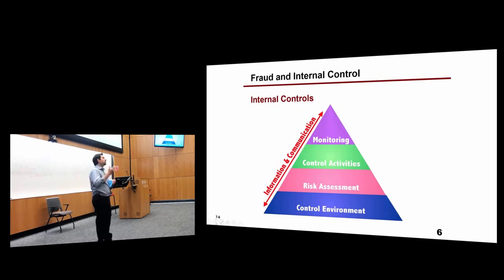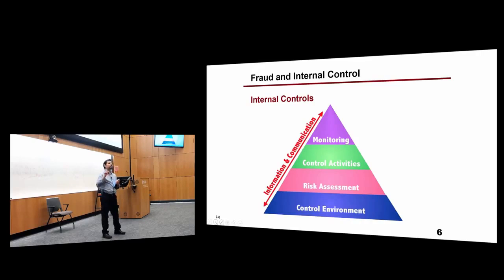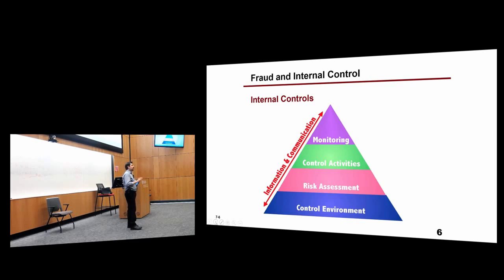There is always someone who should have authority to override certain controls. We found a payment for $660 million in a dataset — it turned out someone had probably added a couple of zeros by mistake. It was canceled by a super user with authority to make such cancellations. It was captured and resolved. You cannot have controls that are completely rigid — business needs some flexibility, but this flexibility can sometimes cause problems.